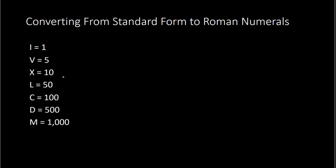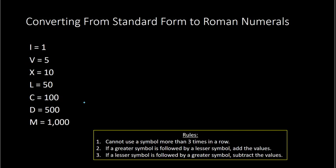From here you can put these different symbols together to create other numbers beyond just these listed. The rules with Roman numerals are: one, you cannot use a symbol more than three times in a row. Rule number two — if a greater symbol is followed by a lesser symbol, you add the values. And if a lesser symbol is followed by a greater symbol, then you subtract the values.